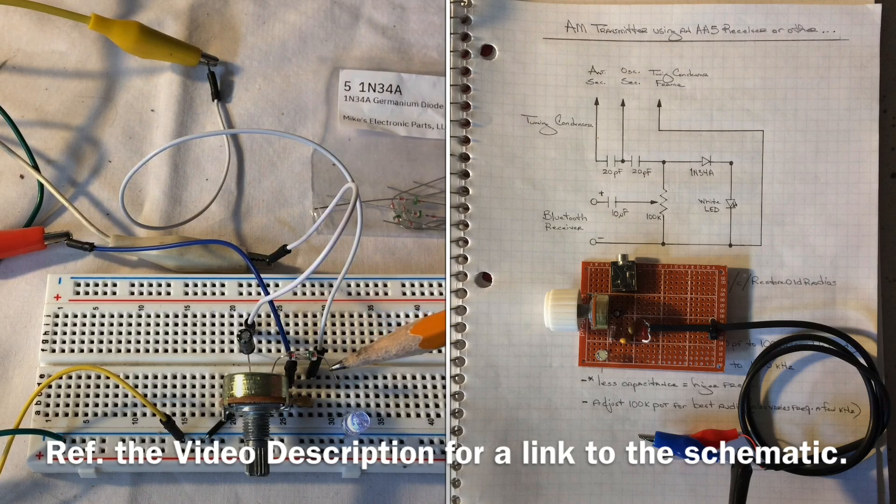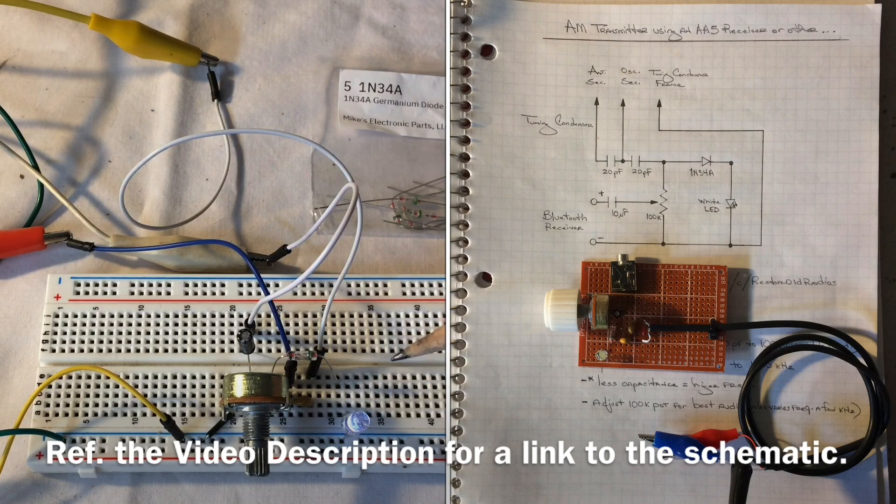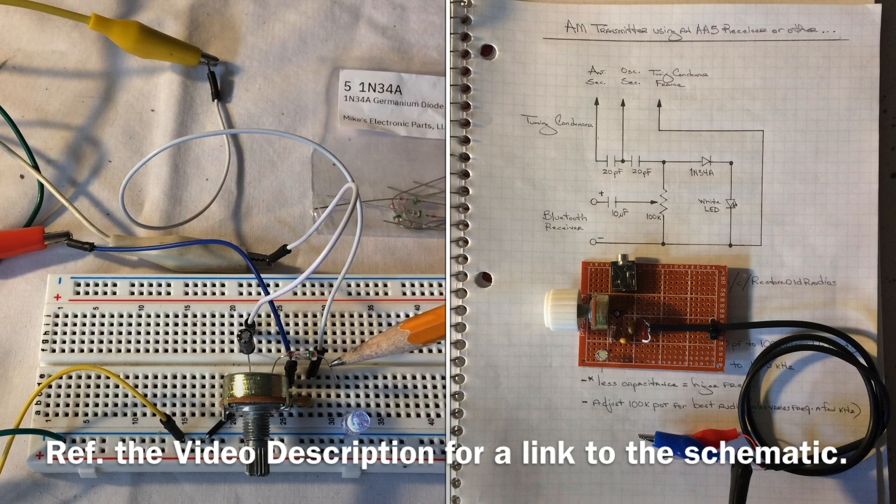And then the other side goes back to the 1N34A diode here, and that acts as the modulator itself for the signal.